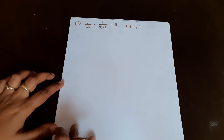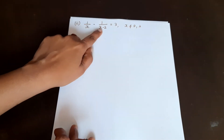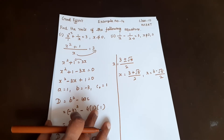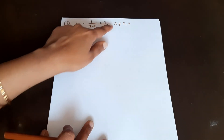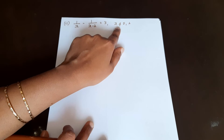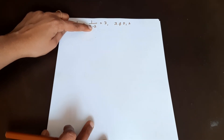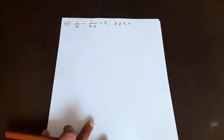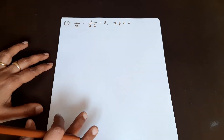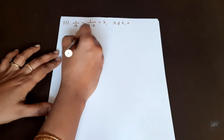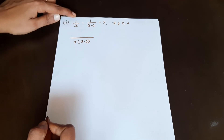Next is part 2 of example 15: 1 by x minus 1 by x minus 2 is equal to 3, where x is not equal to 0 and x is not equal to 2. Note that x cannot be 0 or 2 because 1 by 0 equals infinity, which makes the equation undefined. We take LCM of the denominators, which is x times x minus 2. After simplification, the numerator becomes x minus 2 minus x, and the right side is 3 times x into x minus 2.